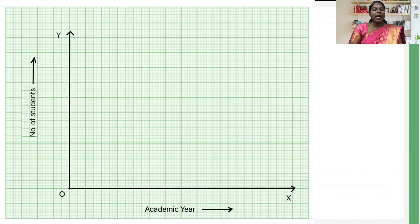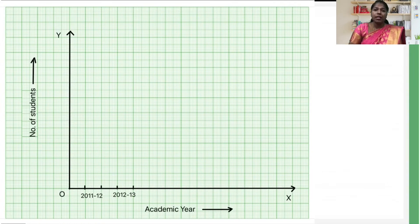In step 3, along the horizontal axis OX we will label the academic years keeping uniform distance: 2011-2012, 2012-13, 2013-14, 2014-15, and 2015-16.